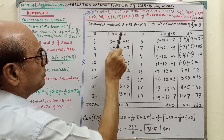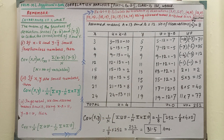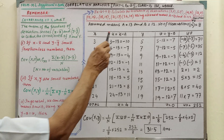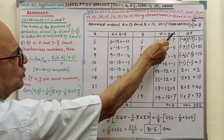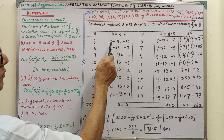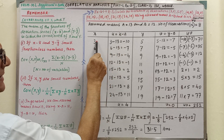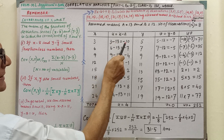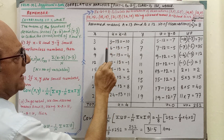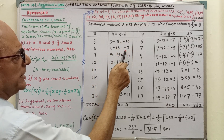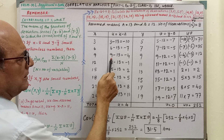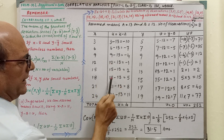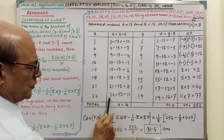Then u equal to x minus A. Here, assuming A and B are given, we have to apply this form of formula. u equals x minus A. So for x equal to 3 and A equal to 13: 3 minus 13 equals minus 10. Then 6 minus 13 equals minus 7. Similarly, 9 minus 13, 12 minus 13, 15 minus 13, 18 minus 13, 21 minus 13, 24 minus 13.